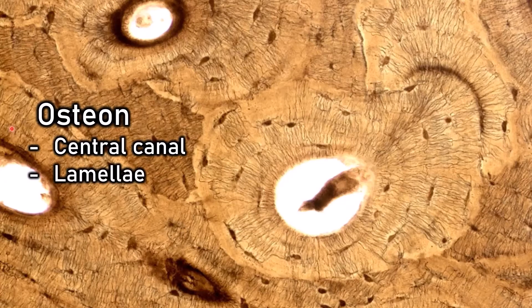If you look at what's separating the lamellae, there are all these dark spots. Those dark spots are actually open spaces — they've just been stained with a dye. Those open spaces are called lacunae, and in the lacunae you would find osteocytes.